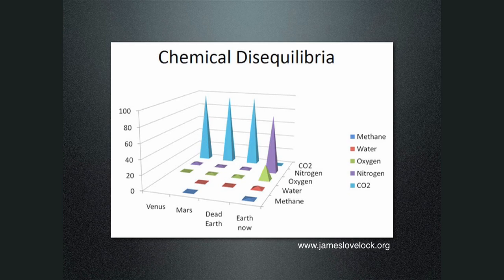What he thought of was the fact that if there was any kind of life, it would have to use the fluid media on the planet — the hydrosphere and the atmosphere. Mars doesn't have much of a hydrosphere at all. So it would have to use the atmosphere to collect the materials and energy for its metabolism. And it would have to use the same fluid media to dump its wastes, which would throw the atmosphere of Mars out of chemical equilibrium.